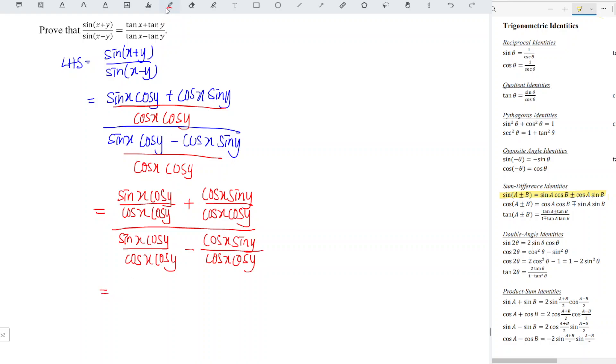us to simplify. For the first term, we can see that cos y over cos y cancel each other, so we're left with sine x over cos x, which is tangent x. Plus, cos x over cos x cancel each other, so we're left with tangent y.